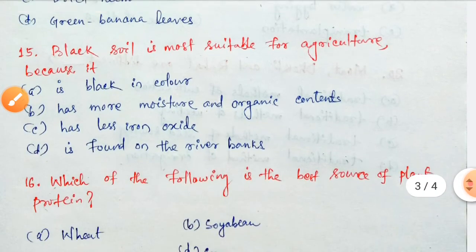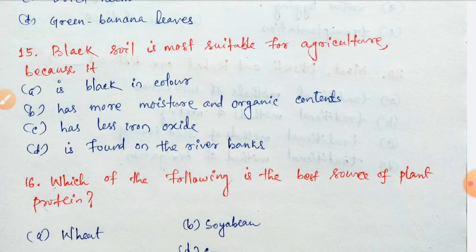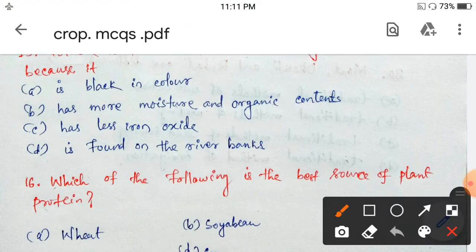Next question: black soil is most suitable for agriculture because — it is black in color, it has more moisture and organic content, it has less iron oxide, or it is found on river banks? Black soil is most suitable because it has more moisture and organic content. Option B.